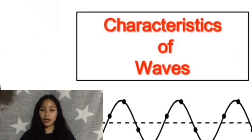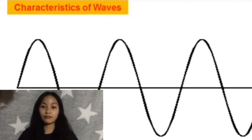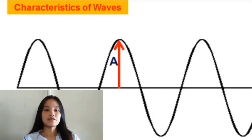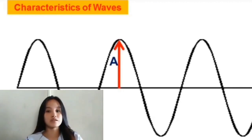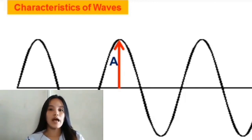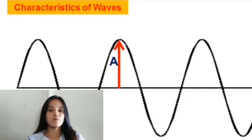Now let us discuss the characteristics of waves. First is amplitude. Amplitude is the height of a wave and is usually measured in meters. Remember also that the amplitude of a wave is associated with the amount of energy the wave is carrying.